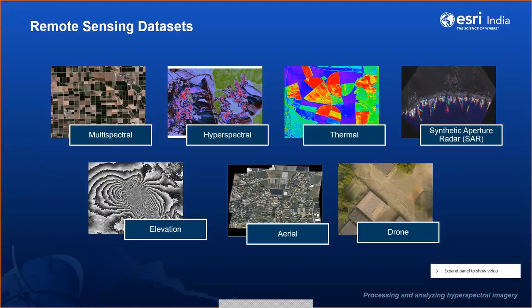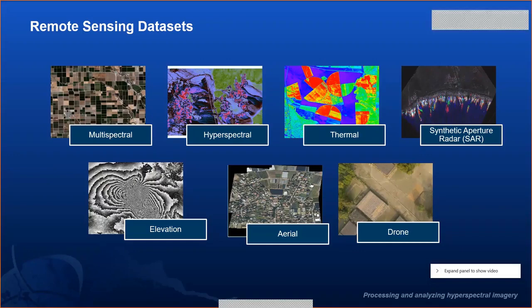Before we go into the details, let's understand what remote sensing datasets are available. You may work with all or some of these datasets. Multispectral data is 3-band or more, like Landsat or Sentinel — spectral imaging containing more than 13 bands where each pixel contains certain information. We also have thermal imaging, either multi-dimensional rasters or single-band images, used for surface temperature analysis.